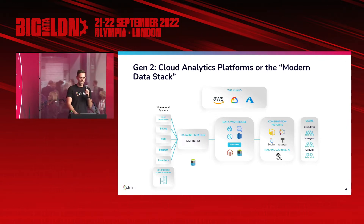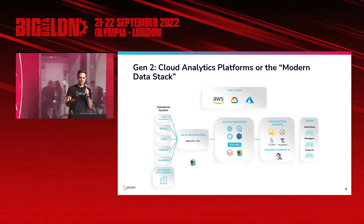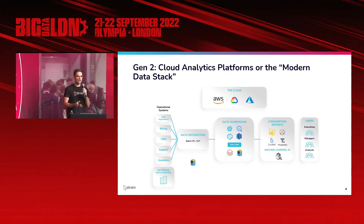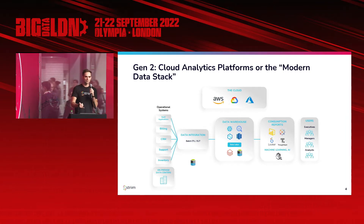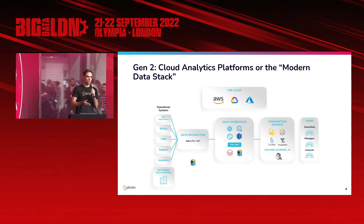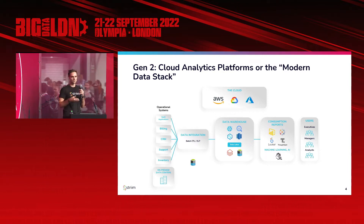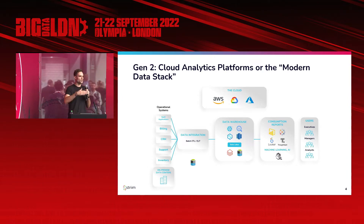What we've seen this evolve into is cloud analytics platforms — some call it the modern data stack — where you're essentially able to build your business intelligence and data infrastructure using scalable cloud systems, whether AWS, Google Cloud, or Microsoft Azure. You can scale out compute as more reports come in, and scale down when there's less workload. This has become very popular, and we've seen many companies shifting to cloud-based architectures in the last couple of years.